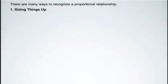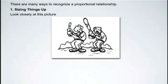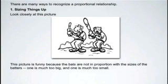So there are many ways to recognize what a proportional relationship is. One is called sizing things up or that is where you just look closely at something. So if we look at this picture and we figure out what is going on here. There is something odd about this picture because the bats are not in proportion with the sizes of the batter. This bat is much too small compared to the size of the batter and this bat is much too large compared to the size of the batter.